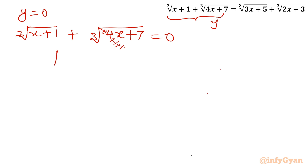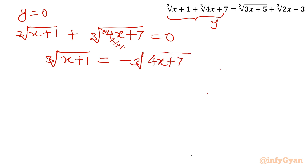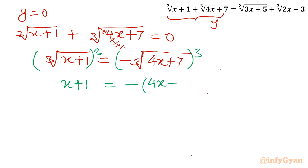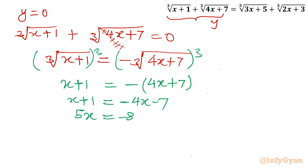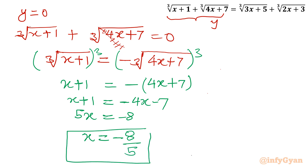Now I take cube of both sides to remove the cube roots. This gives x+1 = (−1)³·(4x+7), which is x+1 = −4x−7. Taking 4x to the left and 1 to the right: 5x = −8, so x = −8/5. This is our first solution.